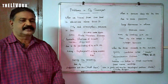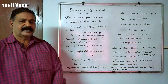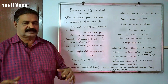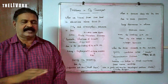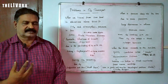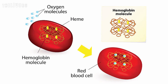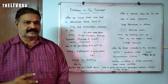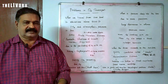In this video, we are going to see the problems in oxygen transport. In our blood, we have hemoglobin. That hemoglobin combines with oxygen to form oxyhemoglobin. So we are able to get enough amount of oxygen in our blood.